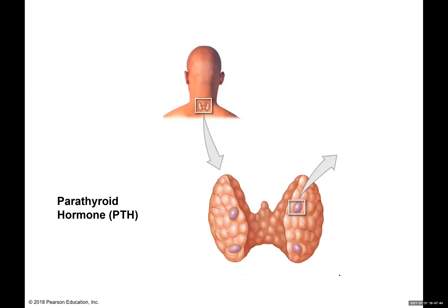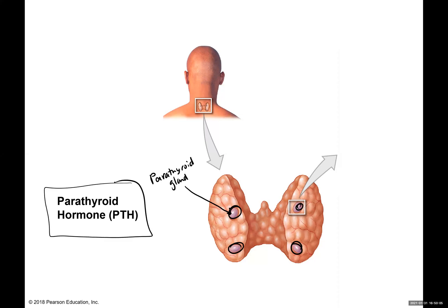When we look at the posterior view of the thyroid, we see four small glands called parathyroid glands. We do have four of these on the posterior side of the thyroid. The hormone produced here is the parathyroid hormone, abbreviated PTH — another one studied in AMP1, so it should be pretty familiar.